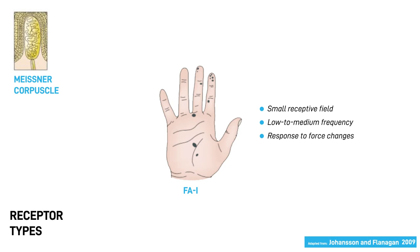Meissner corpuscles are called fast-adapting type 1 or FA1 receptors. They have small receptive fields and are sensitive to low to medium frequencies. They mainly respond to fast force changes.